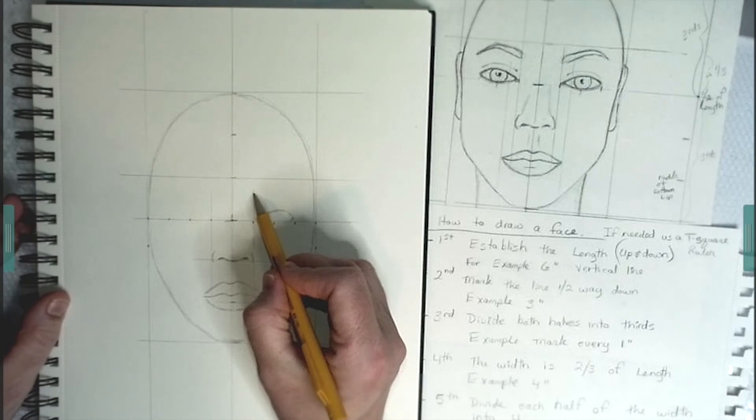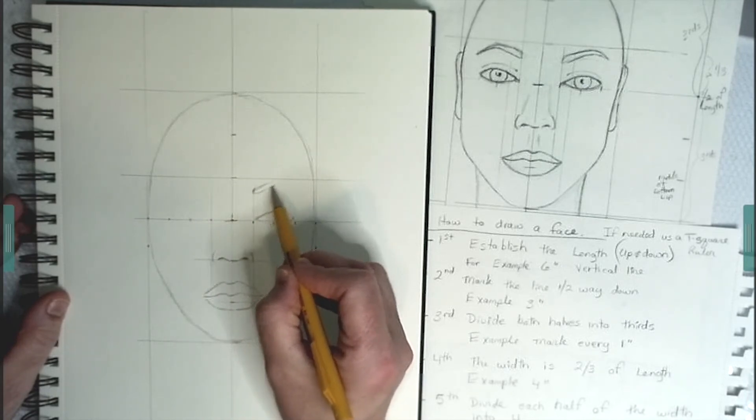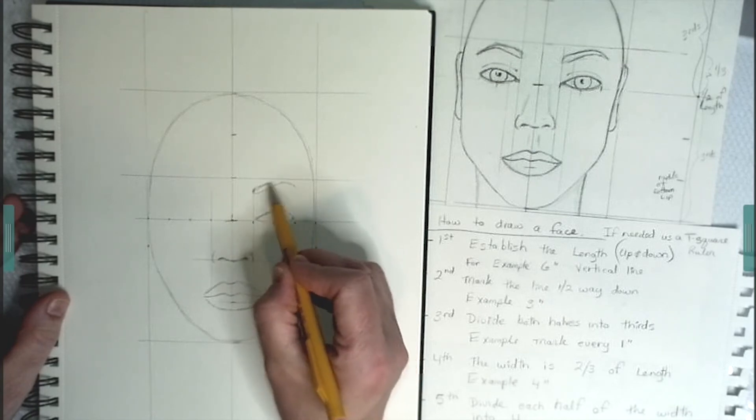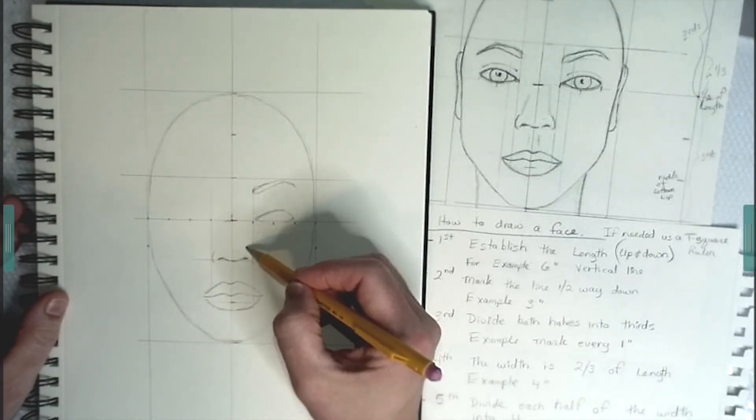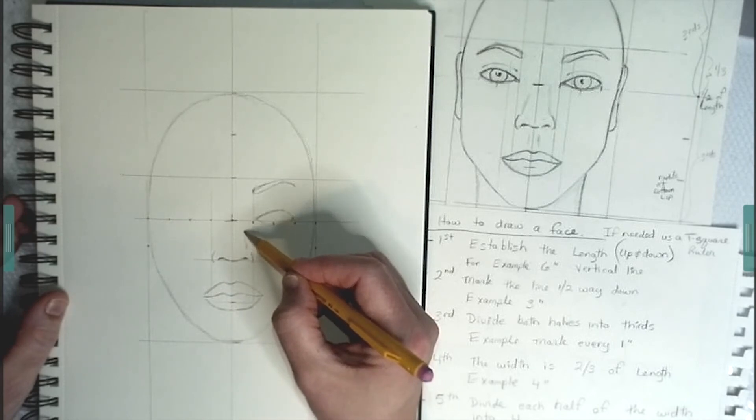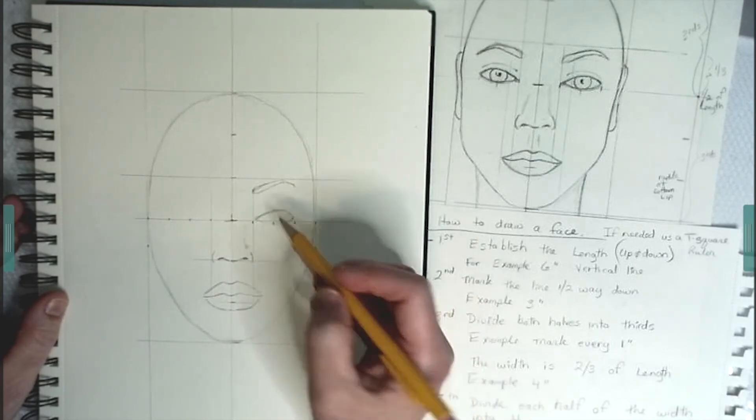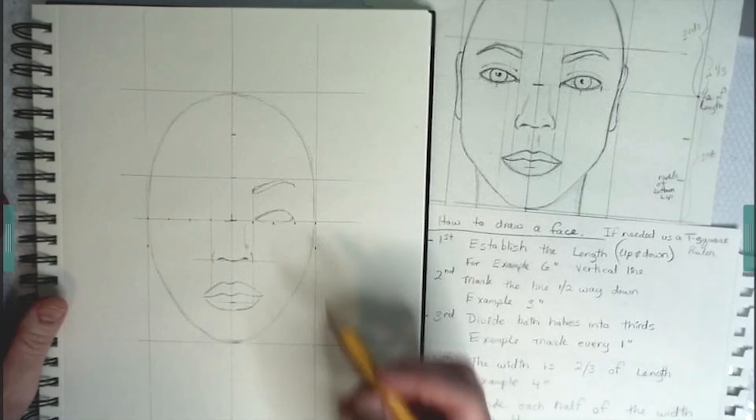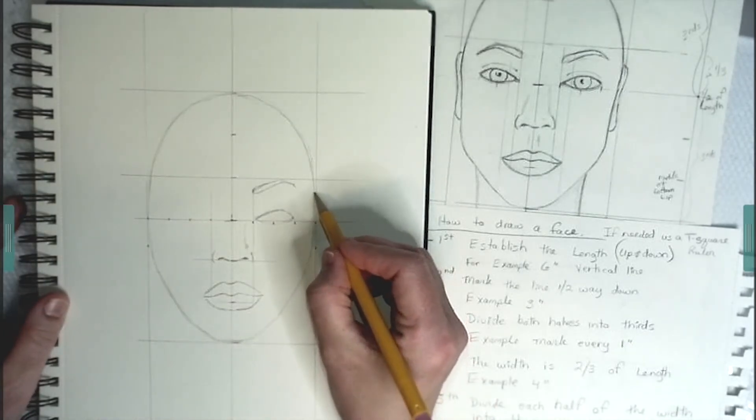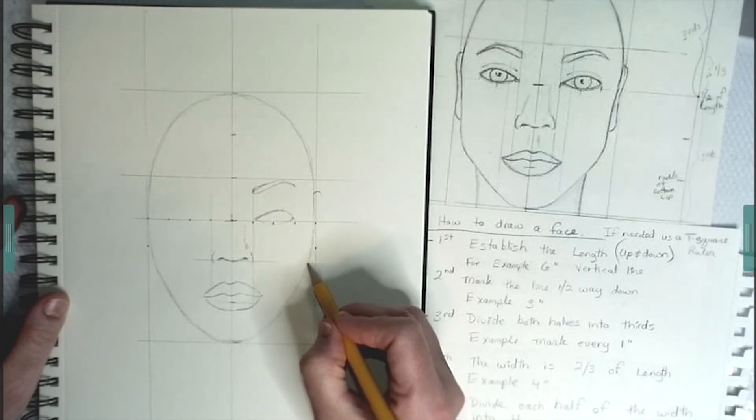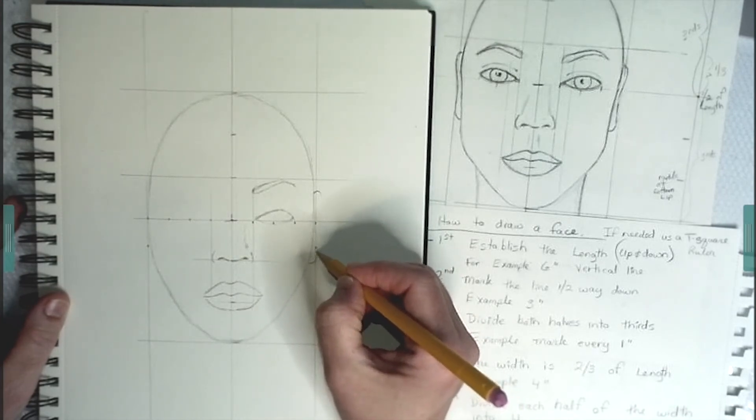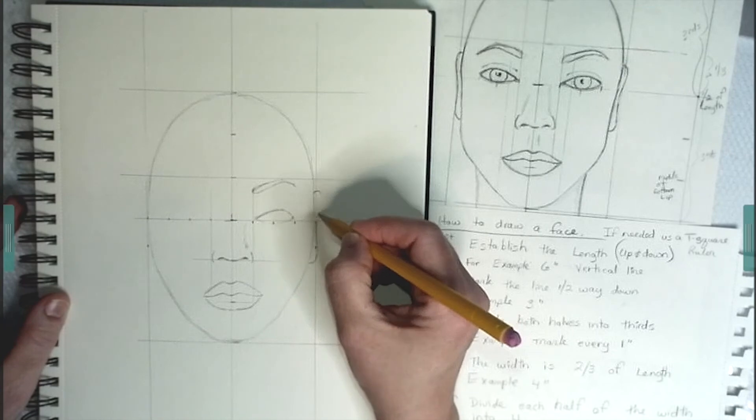The eyebrows always appear to me to be a lot higher than I imagined them to be. But this has always worked. You can make them thicker or thinner depending on your style. I like to establish a shadow on one part of the nose. And this establishes where the light is coming from later on. I'll be shading the face. And I have to know where the light is coming from.